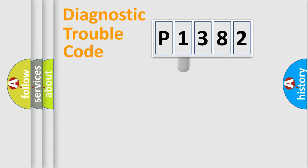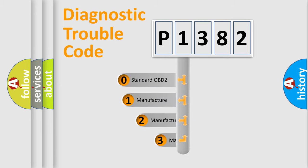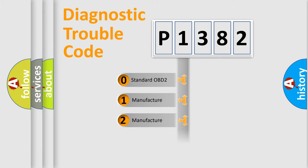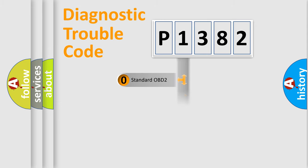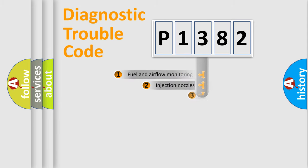This distribution is defined in the first character of the code. If the second character is expressed as zero, it is a standardized error. In the case of numbers 1, 2, or 3, it is a manufacturer-specific expression of a car-specific error.